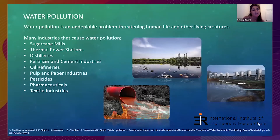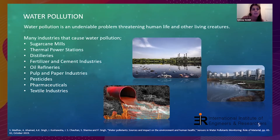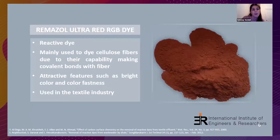Water pollution is an undeniable problem threatening human life and other living creatures. Many industries cause water pollution, including sugar cane, distilleries, oil, chemicals, pesticides, and pectin materials. The dye under study is Remazol Ultra Red RGB, which is a reactive dye used in pectin materials. It has coloring techniques and is mainly used to dye cellulose fibers due to its capability of bonding with fibers.